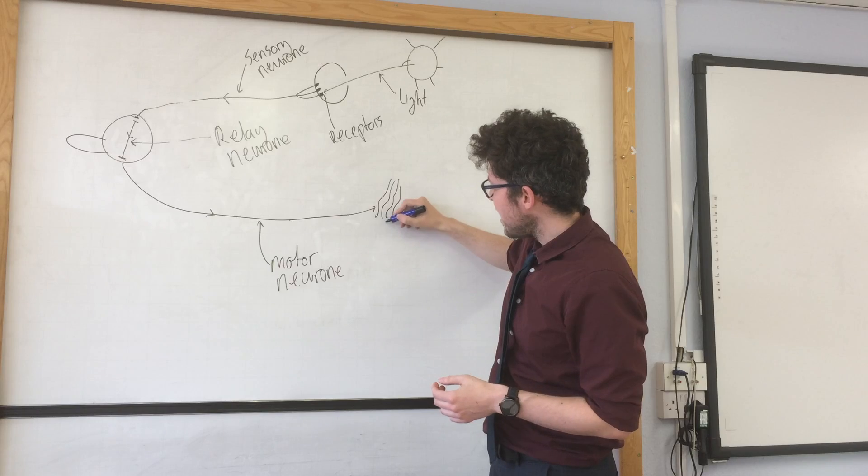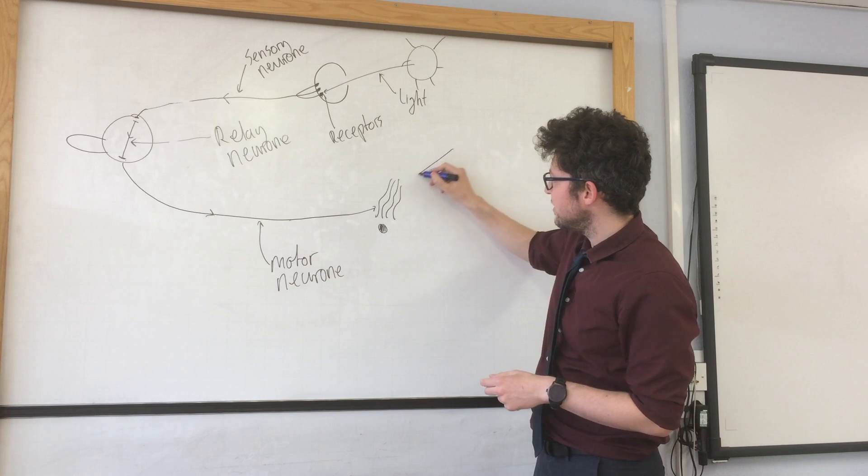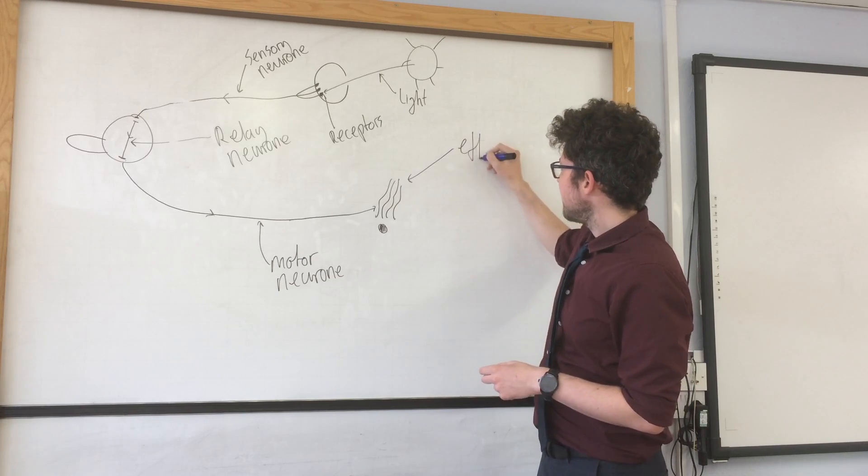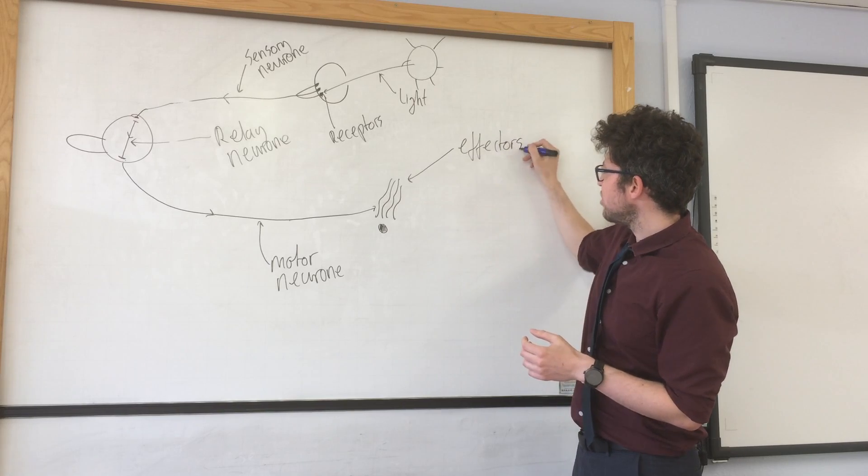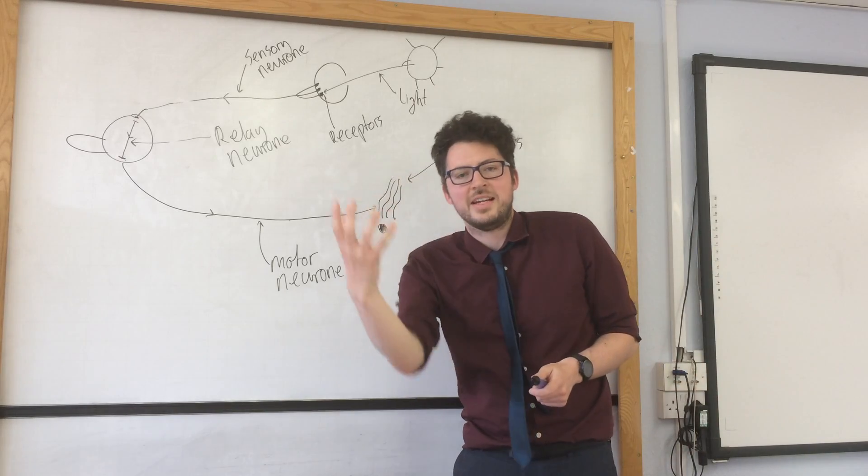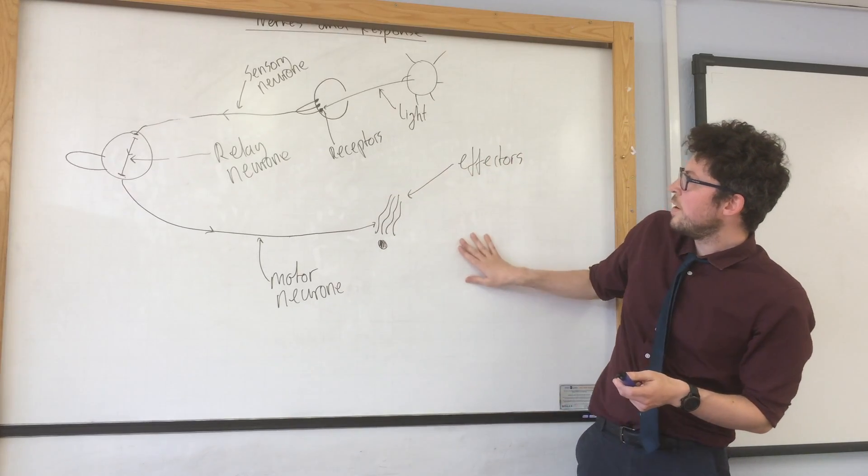Or a gland. So these are called effectors. And they're called effectors because they actually bring about the effect, which is what we want to do in response to our stimulus.